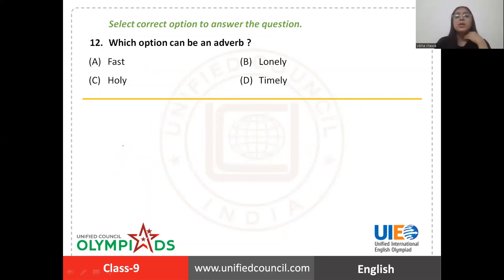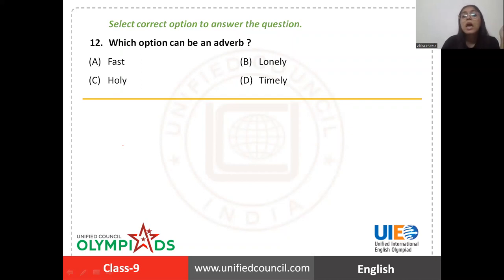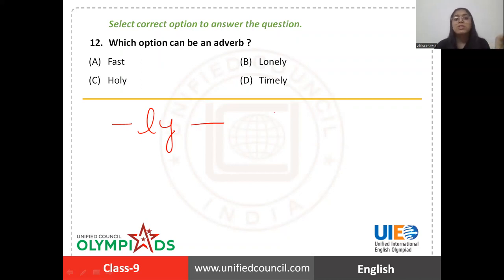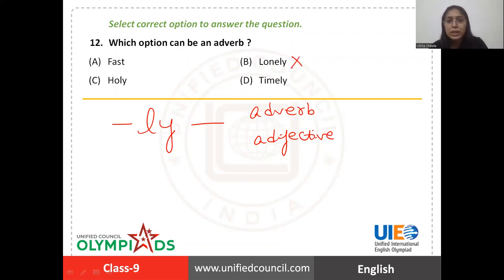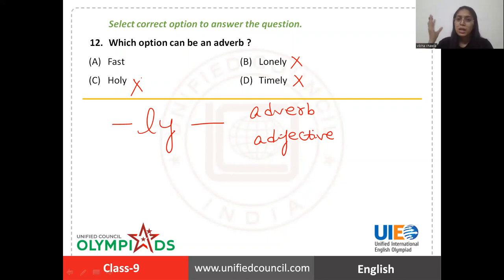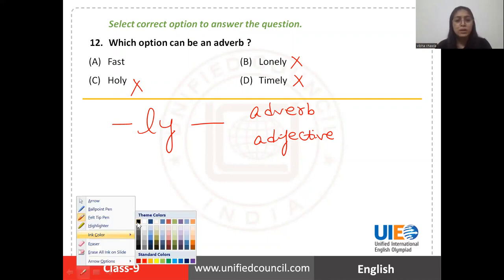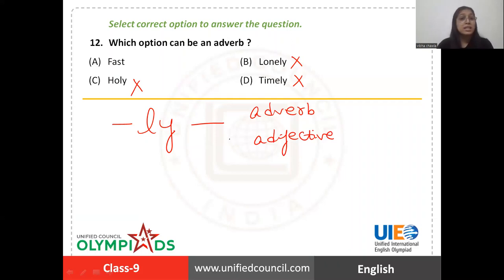In question number twelve, you have to tell which option can be an adverb. The options are 'fast', 'lonely', 'holy', and 'timely'. As I already told you, not every word ending in 'ly' will be an adverb — sometimes it can be an adjective also. Words ending in 'ly' are not always adverbs. That's why 'lonely', 'timely', and 'holy' are not adverbs — though they have 'ly' at the end, they are adjectives.